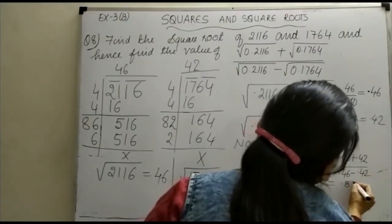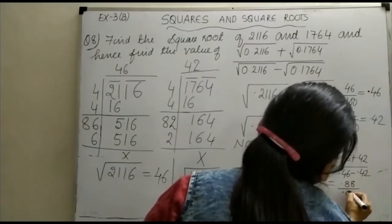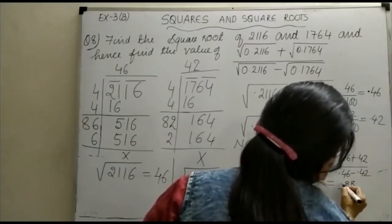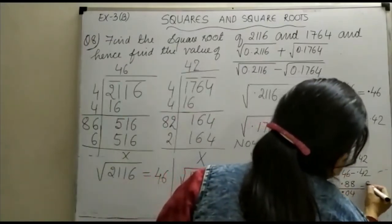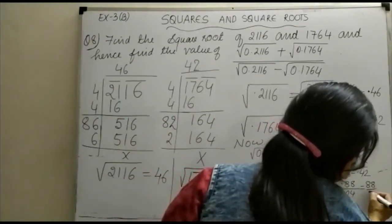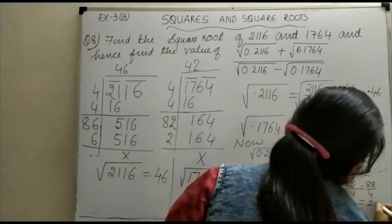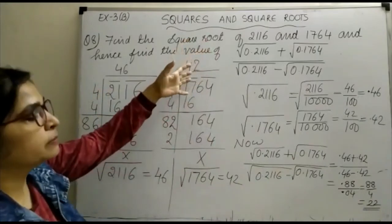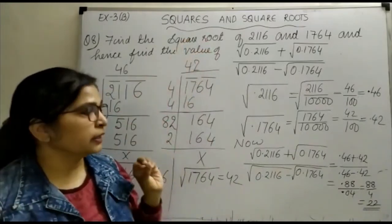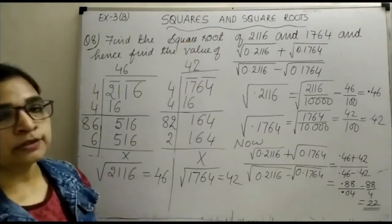यह आपका हो जाएगा 0.88 upon 0.04. And just see, आप point दोनों से हटा देंगे, यह आपका हो जाएगा 88 upon 4, and that is equal to 22. So our final answer for the given term is 22. Thank you.